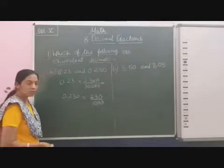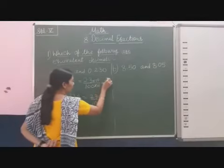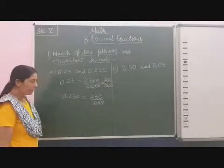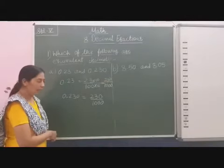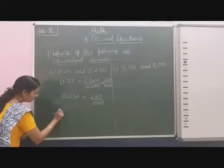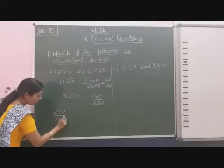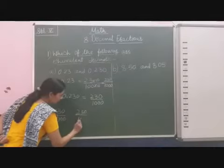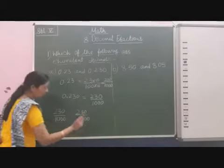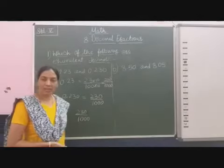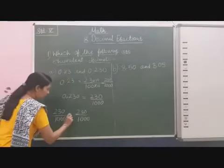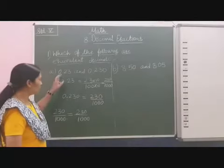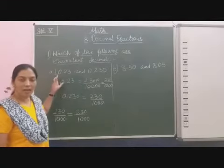What will be the result? 230 by 1000. Now we can easily compare 230 by 1000 and 230 by 1000. These both are equal. So we can put the equal sign, or we can write here the answer that both decimals are equal.